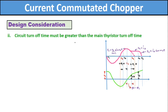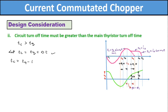The second requirement is that the circuit turn-off time Tc must be greater than the main thyristor turn-off time Tq, which is the SCR turn-off time. Let Tc = Tq + ΔT, meaning Tc exceeds Tq by a time ΔT. From the waveform of the capacitor current, Tc = T4 - T3, and writing this as ω₀ × Tc = π - 2θ₁, we get Tc = (π - 2θ₁) / ω₀. Let this be equation number 3.